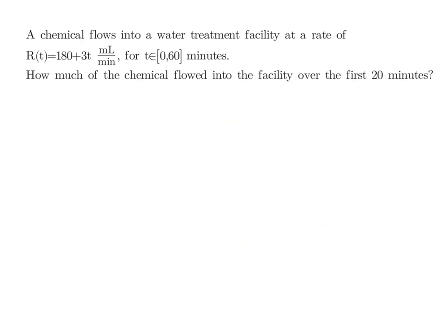So, let's consider an example where a chemical flows into a water treatment facility at a rate of R of T is equal to 180 plus 3T milliliters per minute. For T being on the interval from 0 to 60 minutes. So over this one hour, we have a variable rate of change. That R of T is a rate of change. That's what's very important. So when we want to find out how much of that chemical flowed into the facility over the first 10 minutes, that amount is going to be the integral from 0 to 20 of the rate of change.